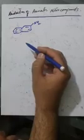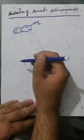Assalamu alaikum. Today we shall talk about the reduction of aromatic nitro compounds using dissolving metal reduction. Let's first look at an example: 2-nitronaphthalene. It's an example of an aromatic nitro compound.